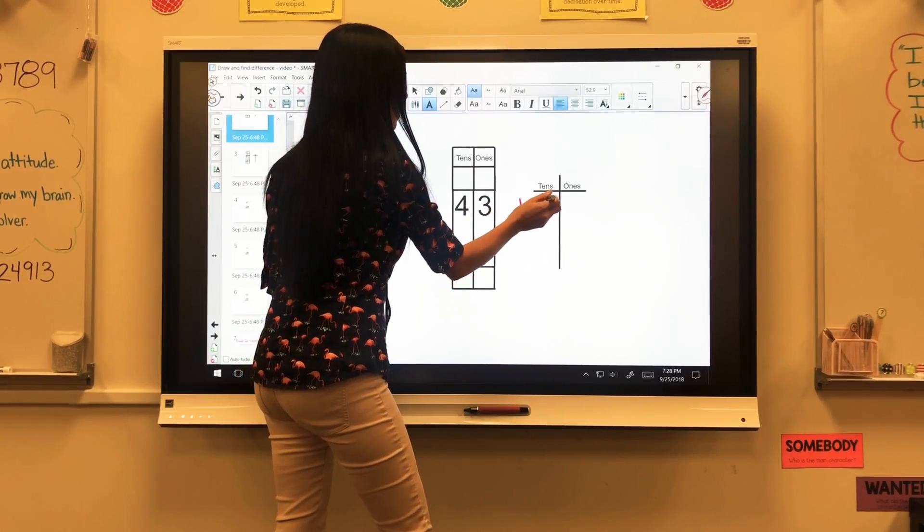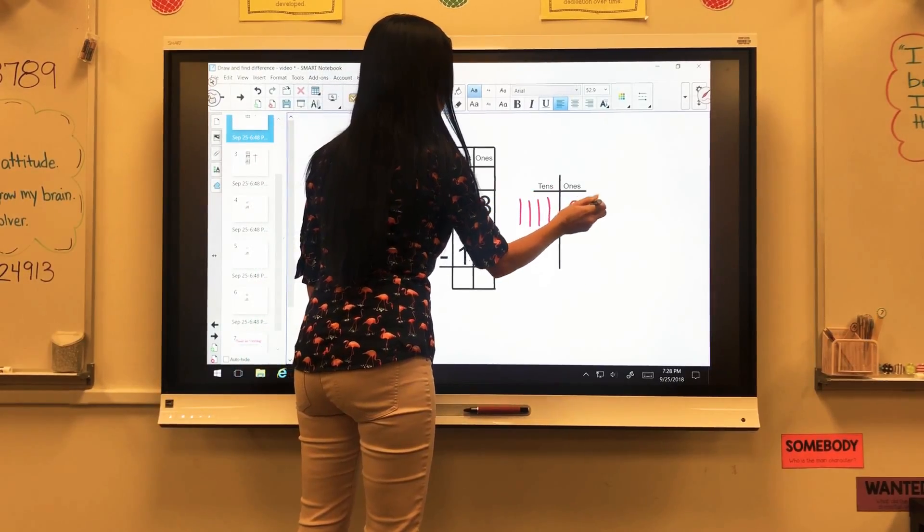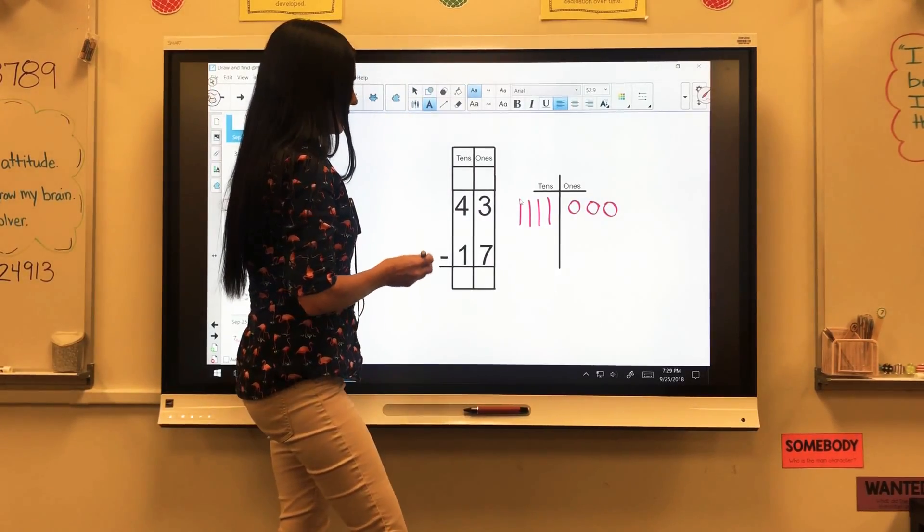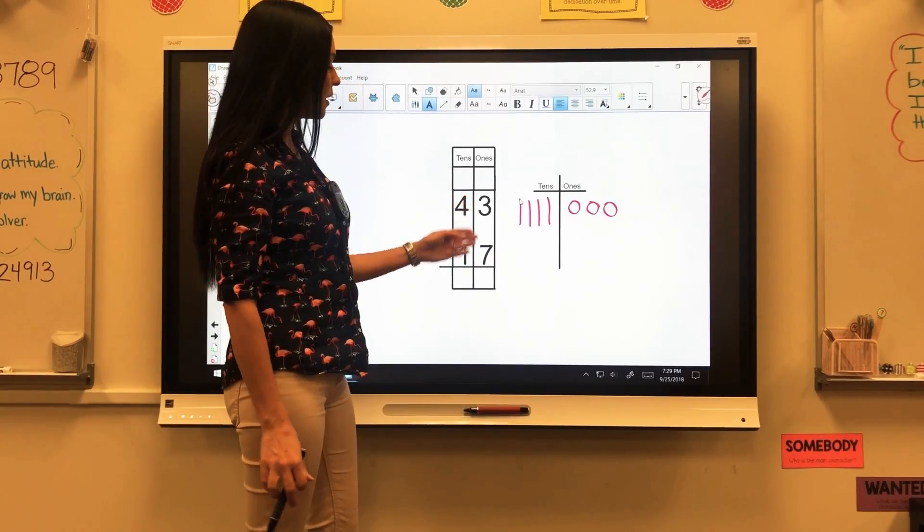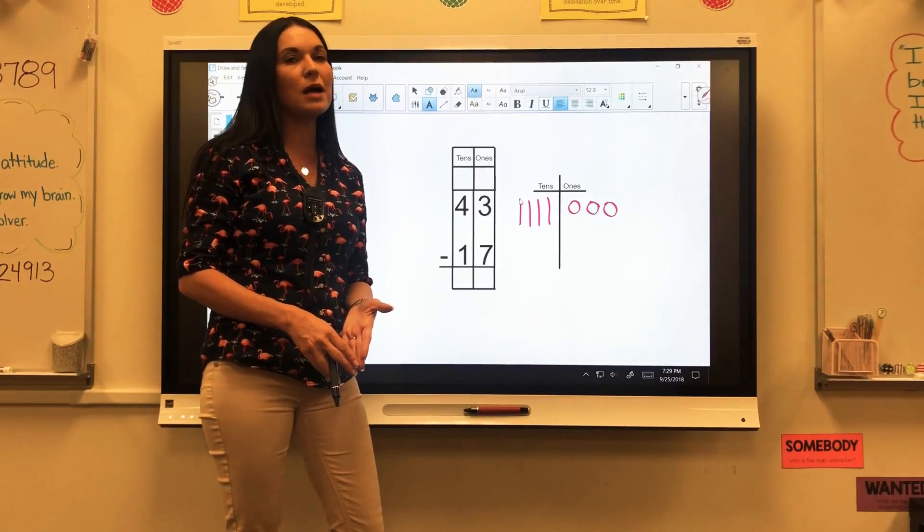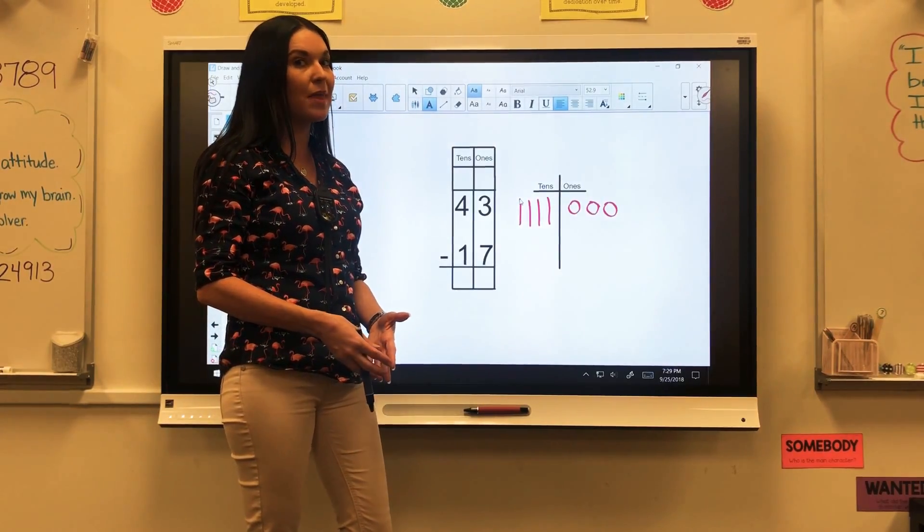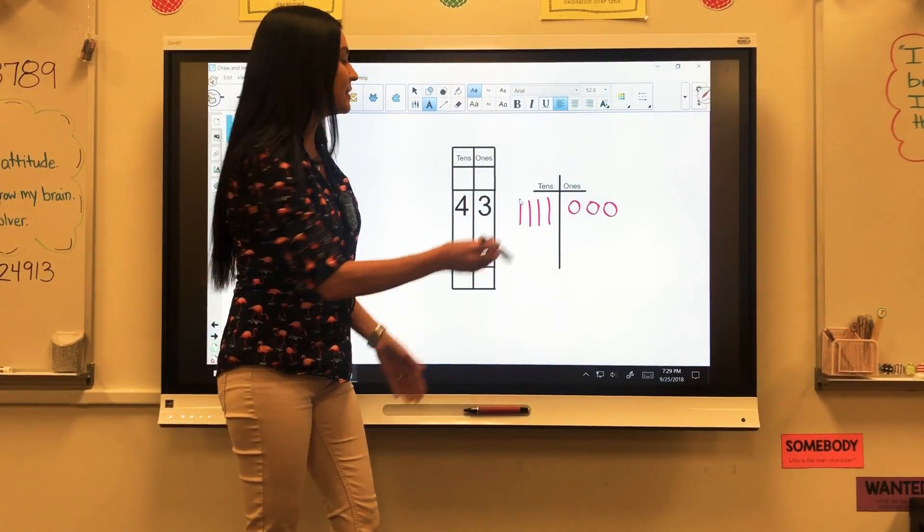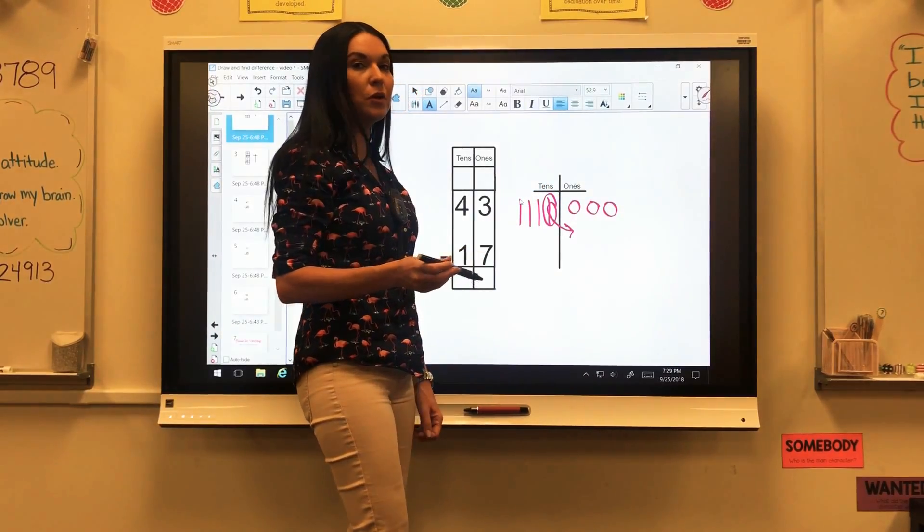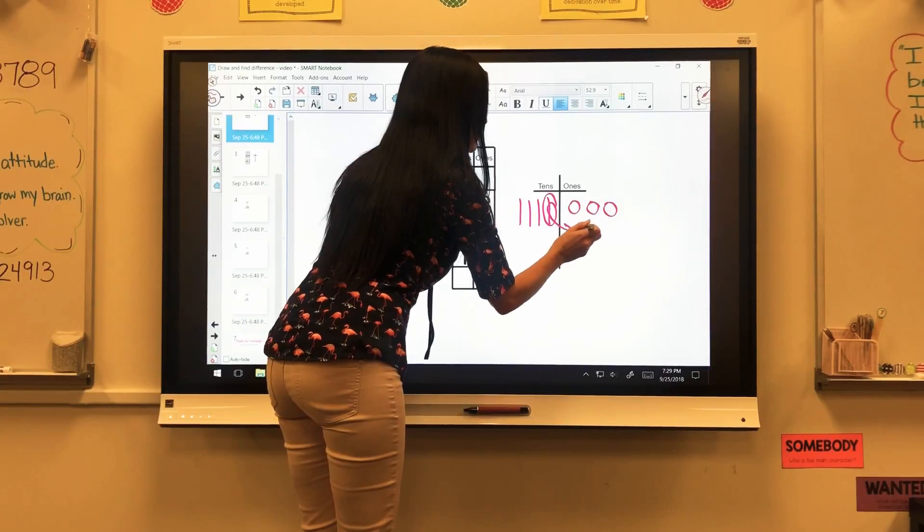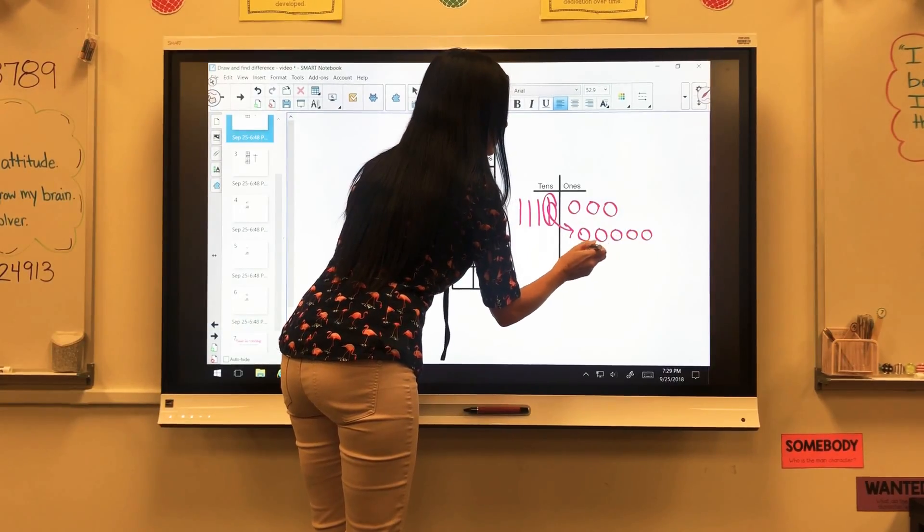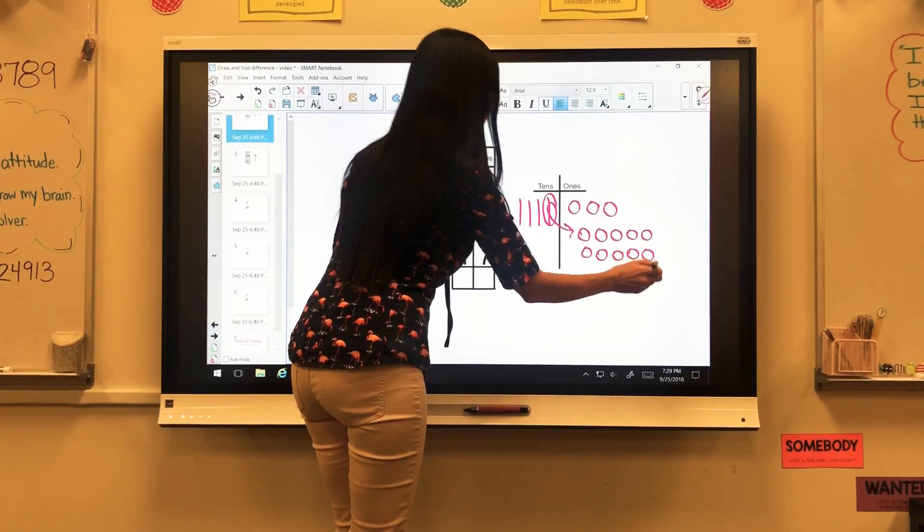1, 2, 3, 4 tens. 1, 2, 3 ones. Then I'm going to see that I need to subtract 17. Well starting on my ones side, 3 minus 7. If I only have 3 ones, I can't take 7 away from that. So I'm going to need to take a 10 from over here and I'm going to break that down and regroup that instead of a 10 into 10 ones. 6, 7, 8, 9, 10.